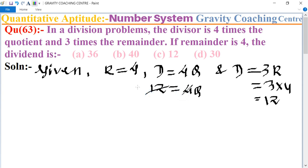So D is 12 and Q equals 3. Therefore, we know that the formula of dividend equals divisor into quotient plus remainder.